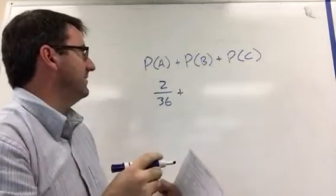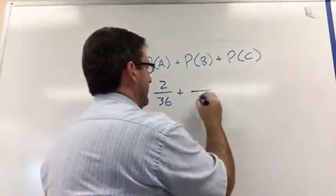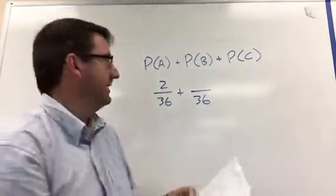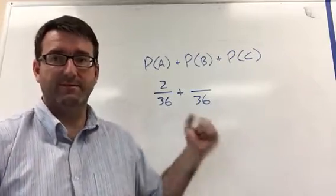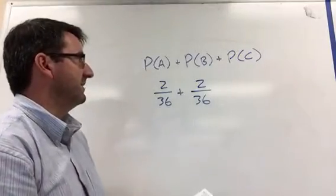And then the second one is 11. So again, there's 36 total outcomes. How many of them are going to sum to 11? A 5 and a 6, or a 6 and a 5. There's only two different possibilities for 11.